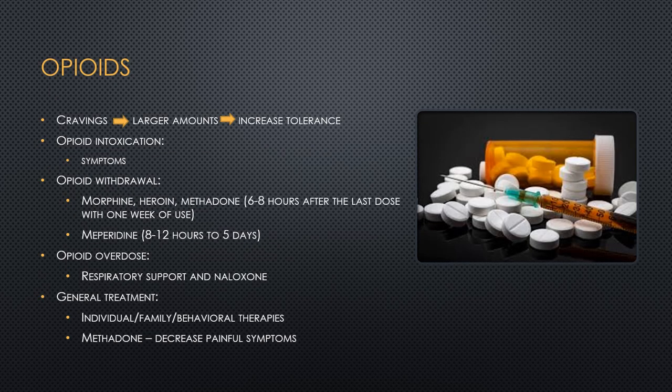Opioid misuse, particularly heroin or prescription drugs, is a chronic relapsing disorder. Patients get an opioid because they have a craving, develop tolerance, need larger amounts, which increases intolerance — a vicious cycle. Opioid intoxication symptoms include drowsiness, coma, slurred speech, impaired memory, pupillary constriction, impaired judgment, and social functioning. We can give naloxone IV to relieve some of those toxic effects.